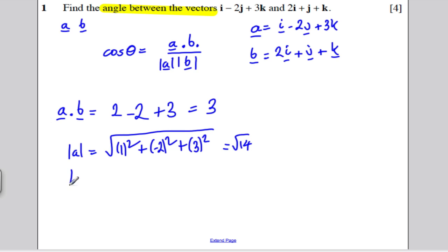What's the modulus of B? Well, it's the square root of 2 squared plus 1 squared plus 1 squared. 4 add 1 is 5. Add another 1 is 6. So it's the square root of 6.